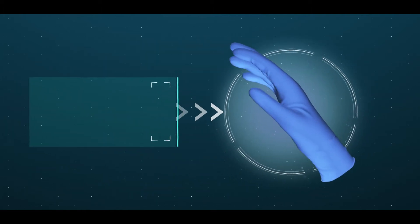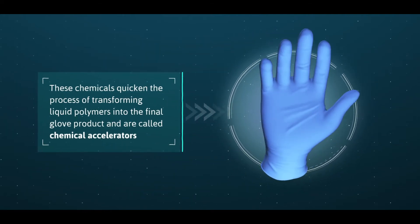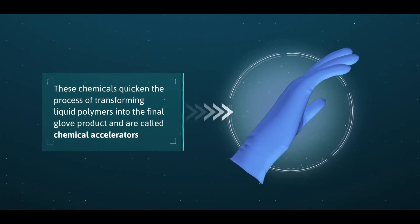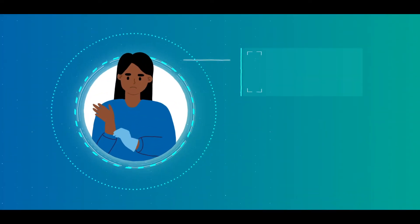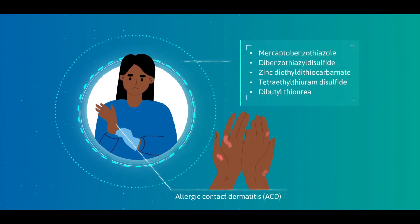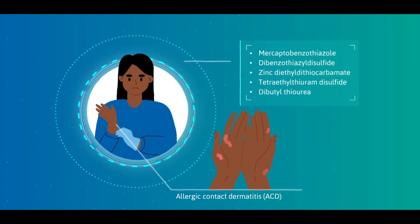These chemicals quicken the process of transforming liquid polymers into the final glove product and are called chemical accelerators. The residual amounts of some of these chemicals in a glove may cause allergic contact dermatitis.